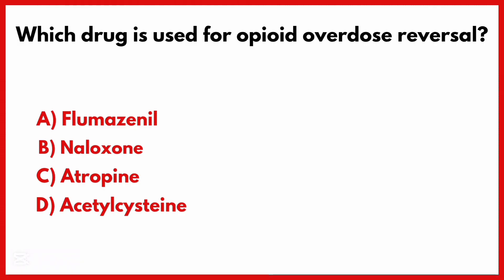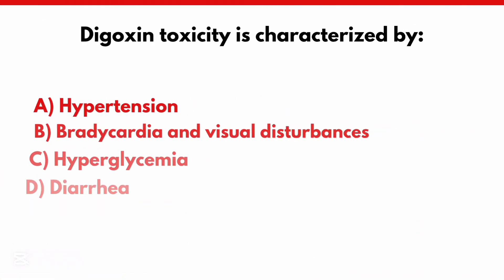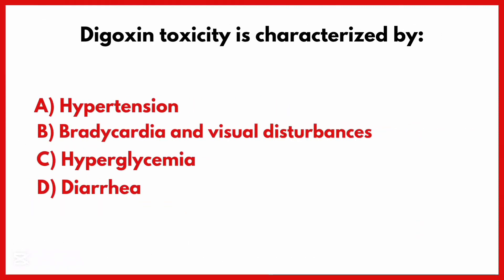Which drug is used for opioid overdose reversal? Correct answer is option B. Naloxone.